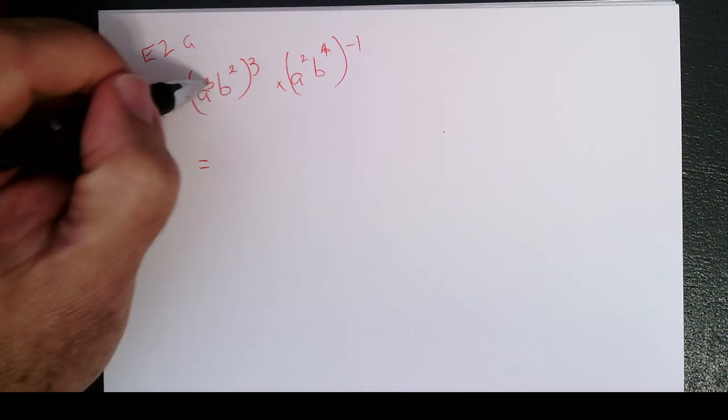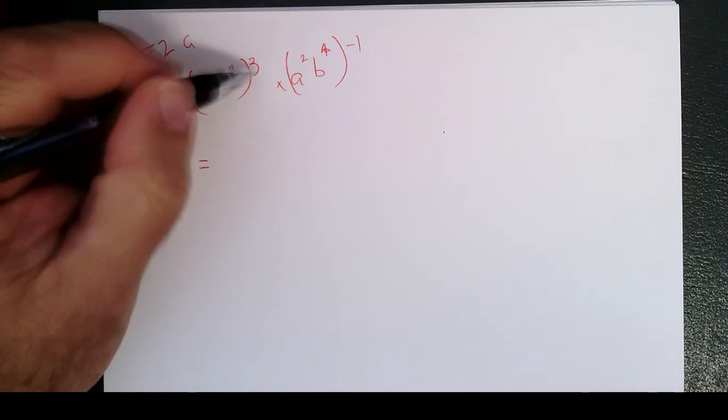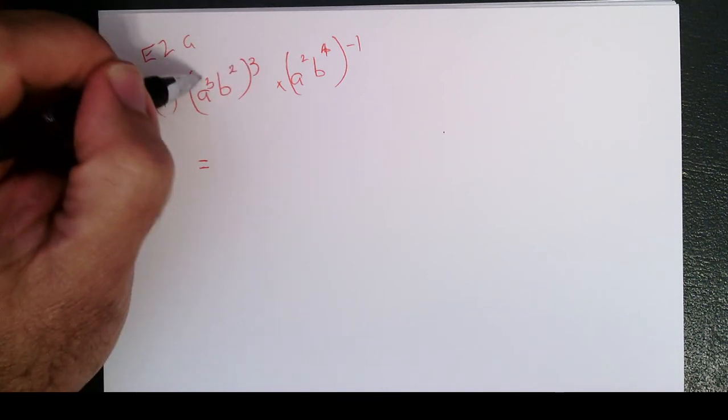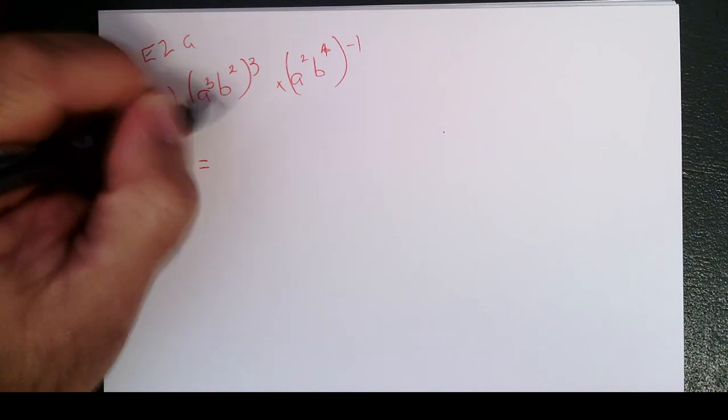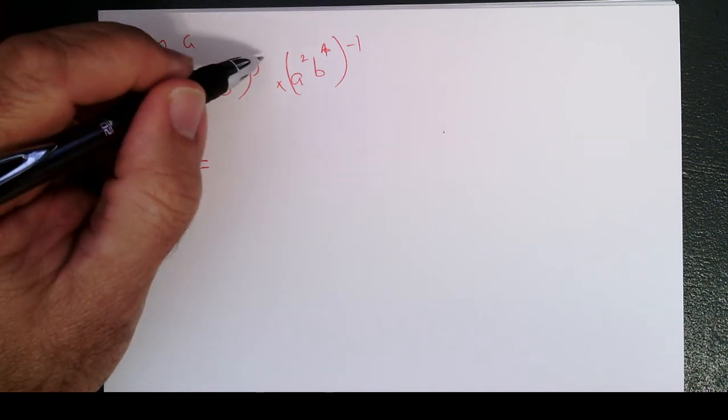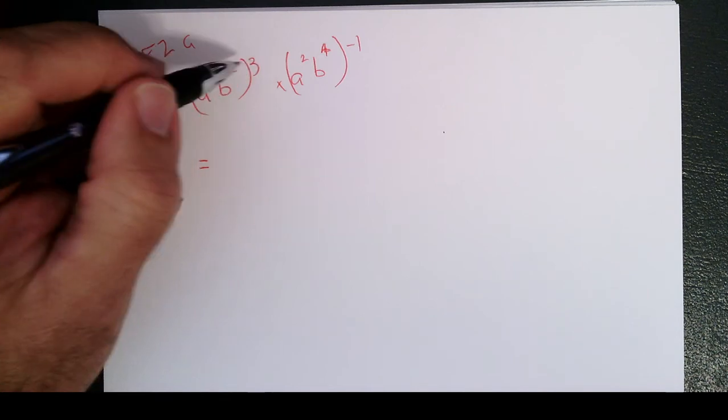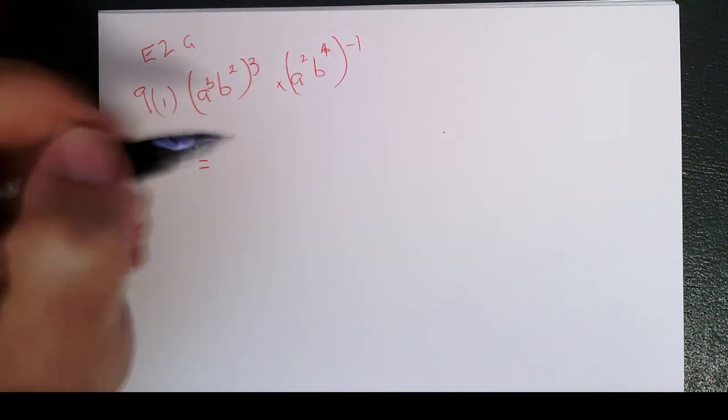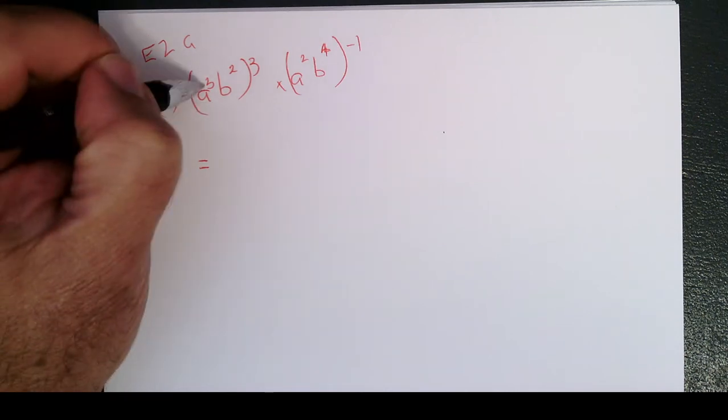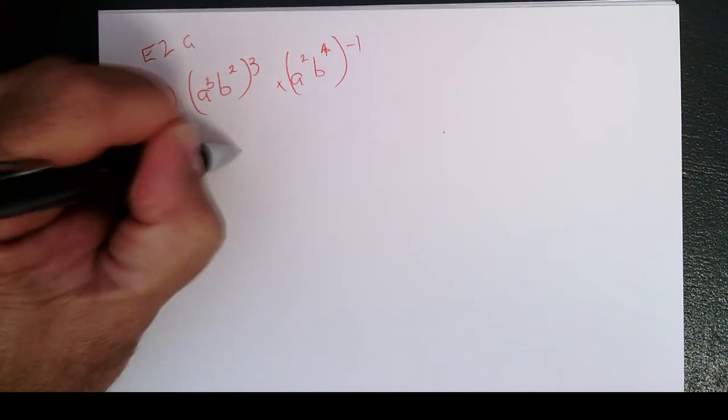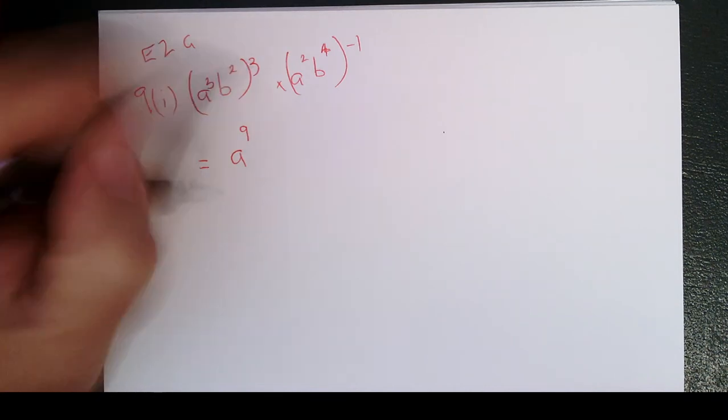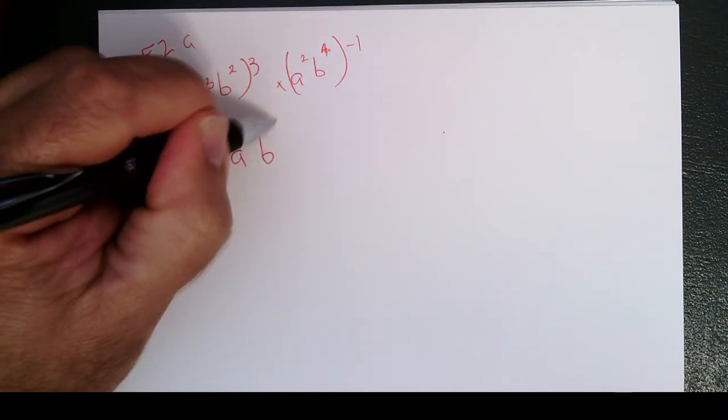So a cubed b squared to the power of 3. This means that both of these terms, both the a cubed and the b squared, both get the power of 3. A power of a power multiplies the power. We've seen that before. So a cubed to the power of 3 is a to the power of 9. b squared to the power of 3 is b to the power of 6.